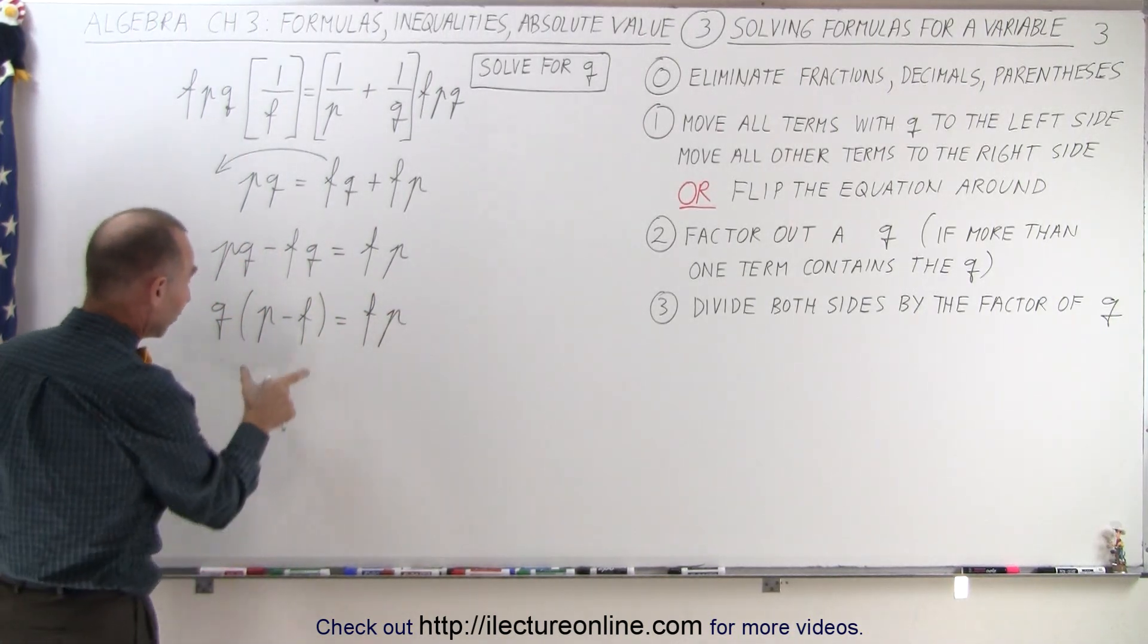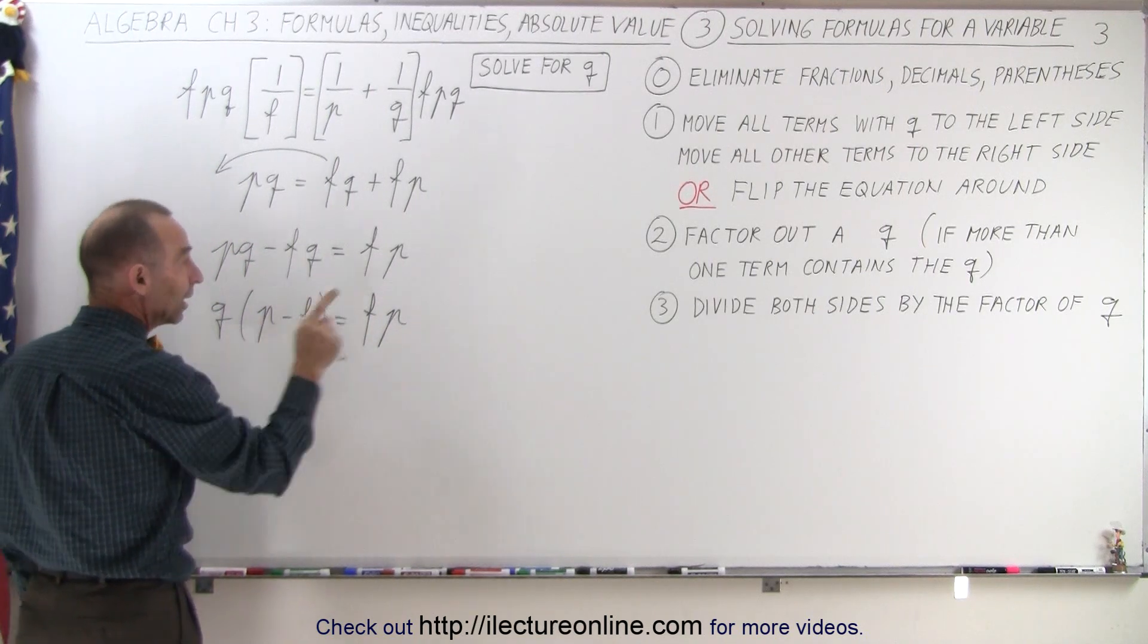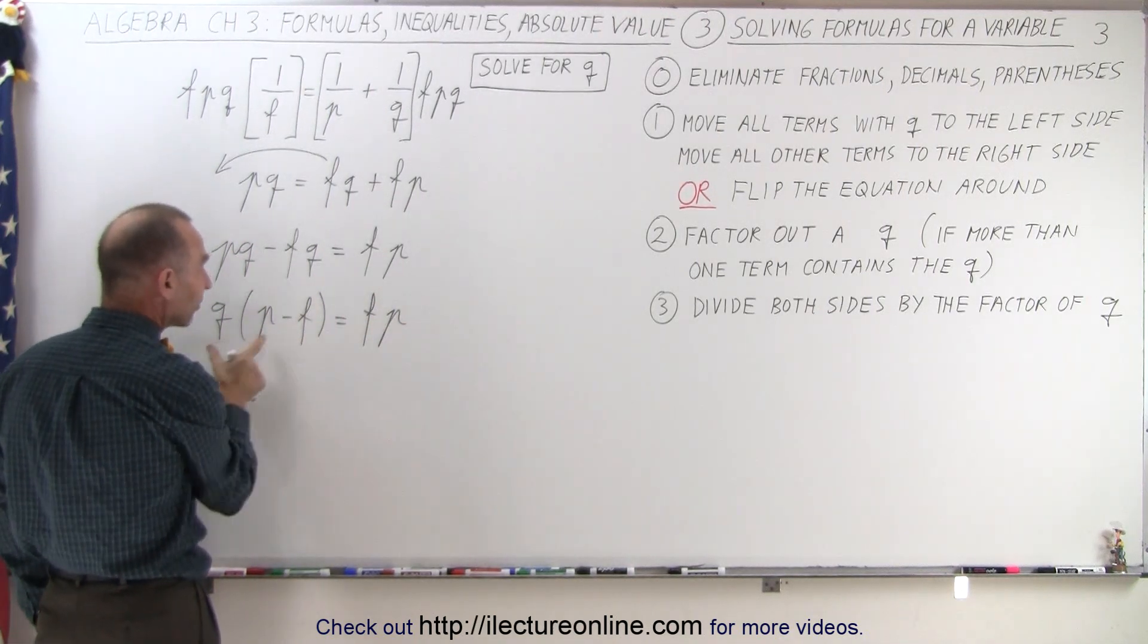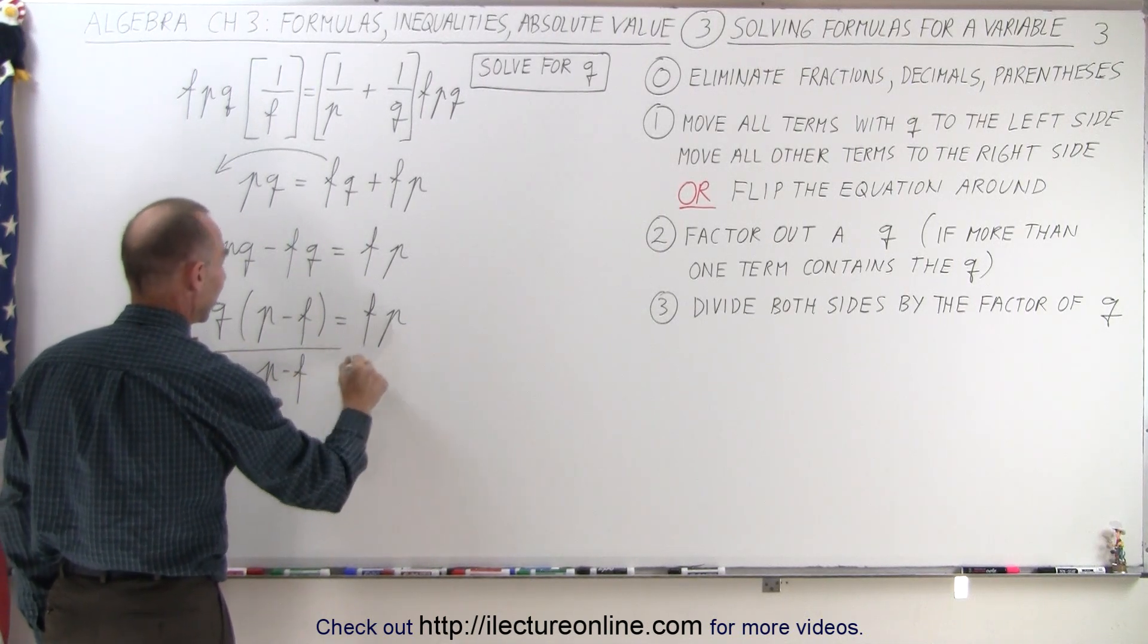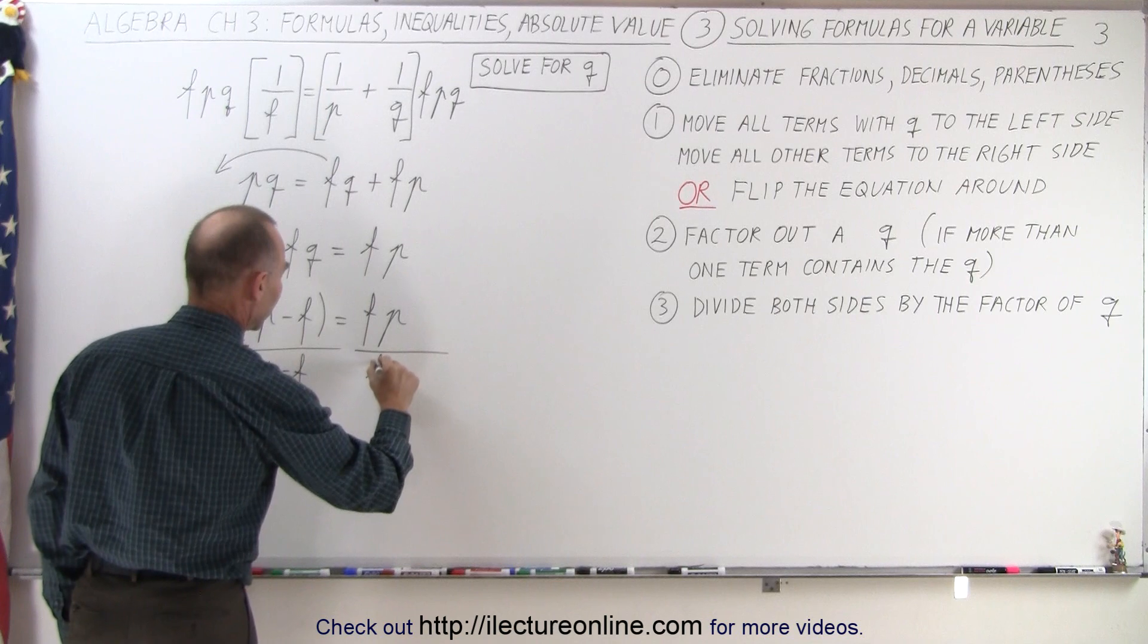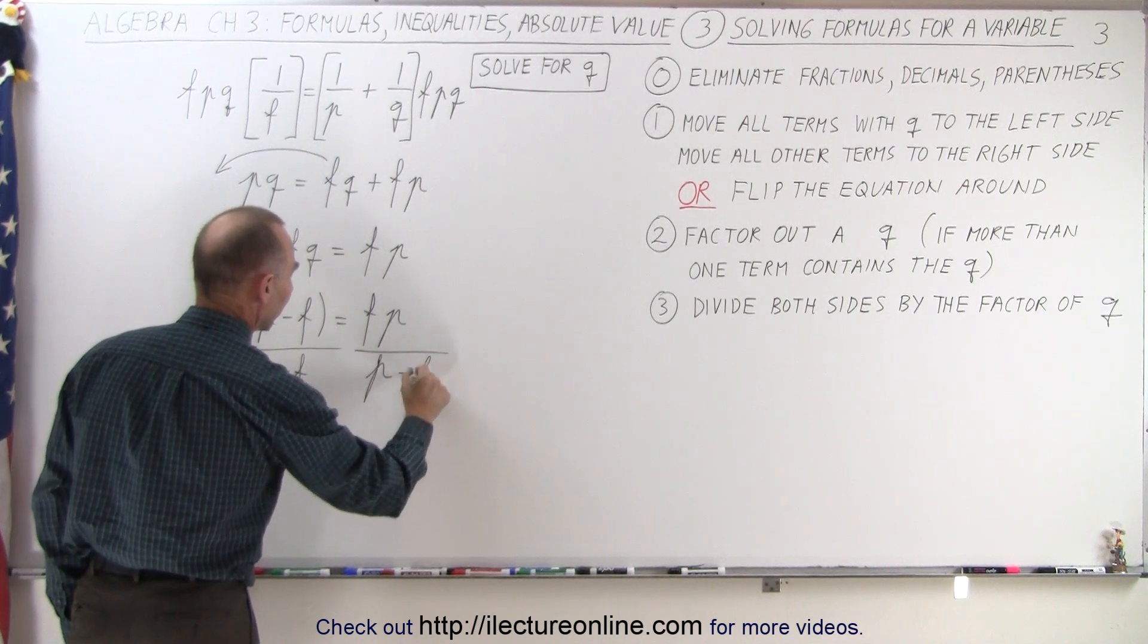And finally, since this is the factor of Q, they tell us divide both sides of the equation by the factor of Q. So divide the left side by P minus F, and divide the right side by P minus F.